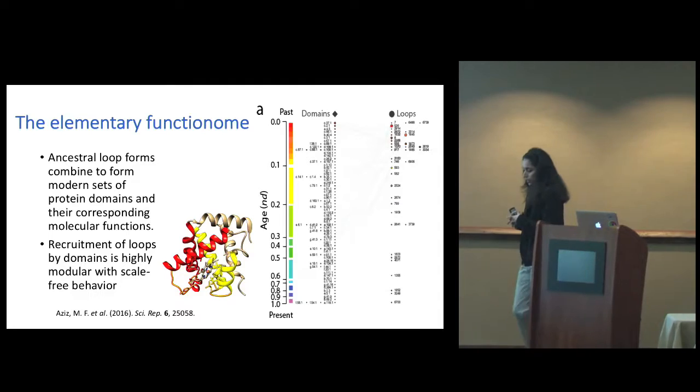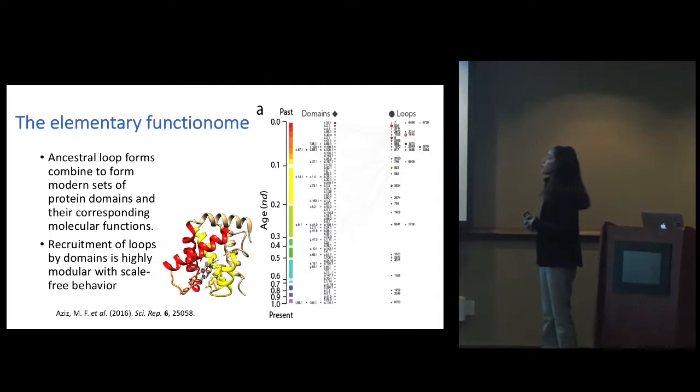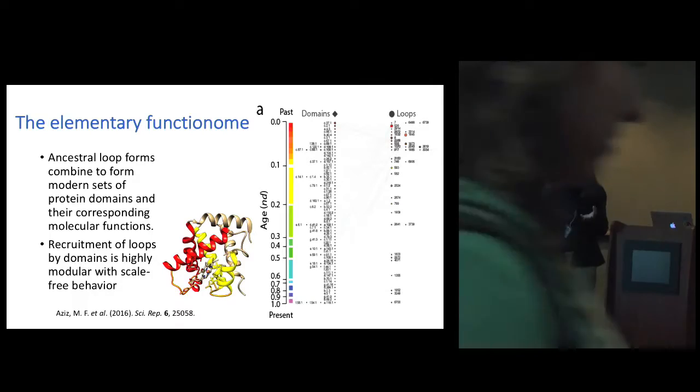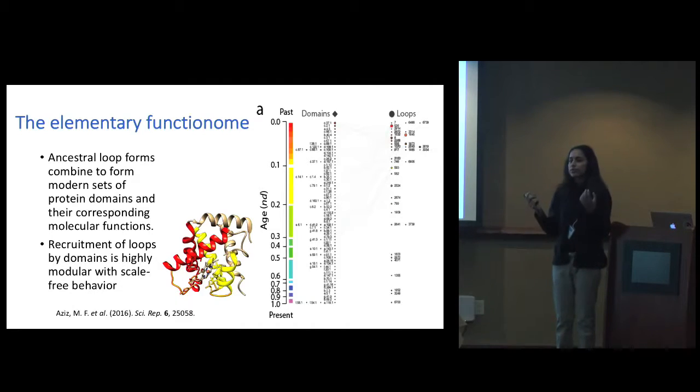Based on this, colleagues in my lab created the elementary functionome. The elementary functionome is a bipartite network that my colleagues created using elementary function loops and protein domains. For those not familiar with network analyses, a bipartite network has two types of nodes and links are only established between dissimilar types of nodes, not similar nodes. A link in this network would be between a loop and a domain when a domain has that particular loop.